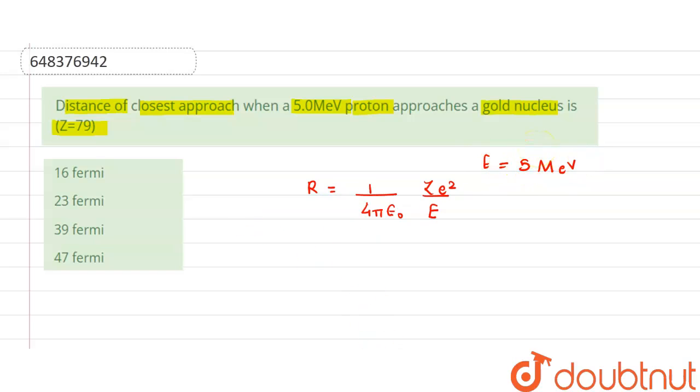Now E will be equal to, in terms of Joule, 5 × 1.6 × 10⁻¹³ Joule. Then, we have Z = 79.